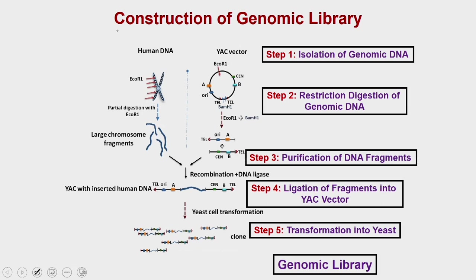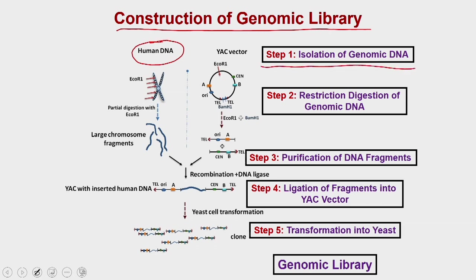The protocol for construction of a genomic library — using the human genome as an example — requires you to first isolate the genomic DNA from the organism of interest. Since human genomic DNA is arranged in chromosomes, the next step is to digest the genome with a suitable restriction enzyme, for which we use EcoRI as an example. We will discuss restriction enzymes in a subsequent lecture.